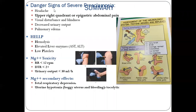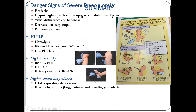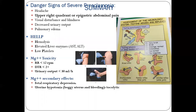The danger signs of severe eclampsia: headache, upper right quadrant or epigastric abdominal pain, visual disturbance and blindness, decreased urine output, and pulmonary edema. This picture shows assessment of the neurological system and testing of sensation and reflexes.